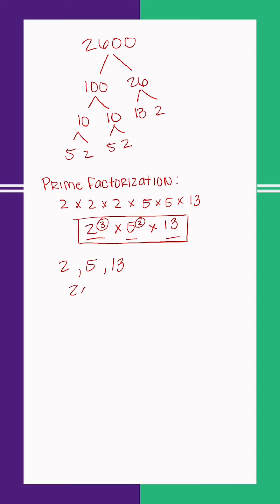So, for example, I could take 2 times 5, and that would be 10, and 10 is a divisor. I could take 2 times 13 and get 26, and 26 would be a divisor.